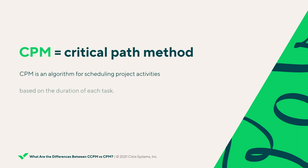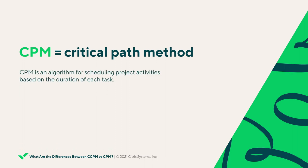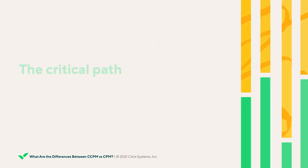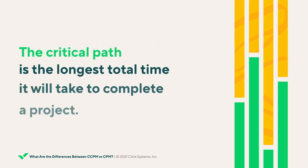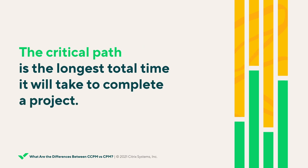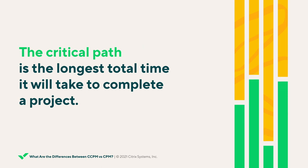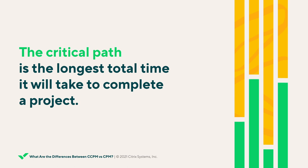Critical Path Method is a resource utilization algorithm for scheduling a set of project activities based on the duration of each task. The length of the project is constrained by a set of dependent tasks which all need to be completed for the project to finish. The critical path is the longest total time it will take to complete the project, taking into account all included tasks and their associated durations.